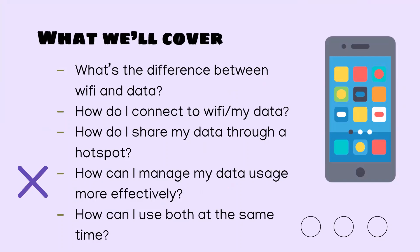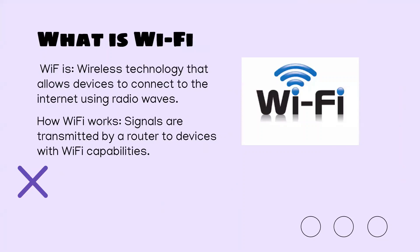So first off, what is Wi-Fi? Wi-Fi is a wireless technology that allows devices to connect to the internet using radio waves. Your computer or phone sends out radio waves that are picked up by your internet router, which you probably have in your house, and that helps you connect to the internet.